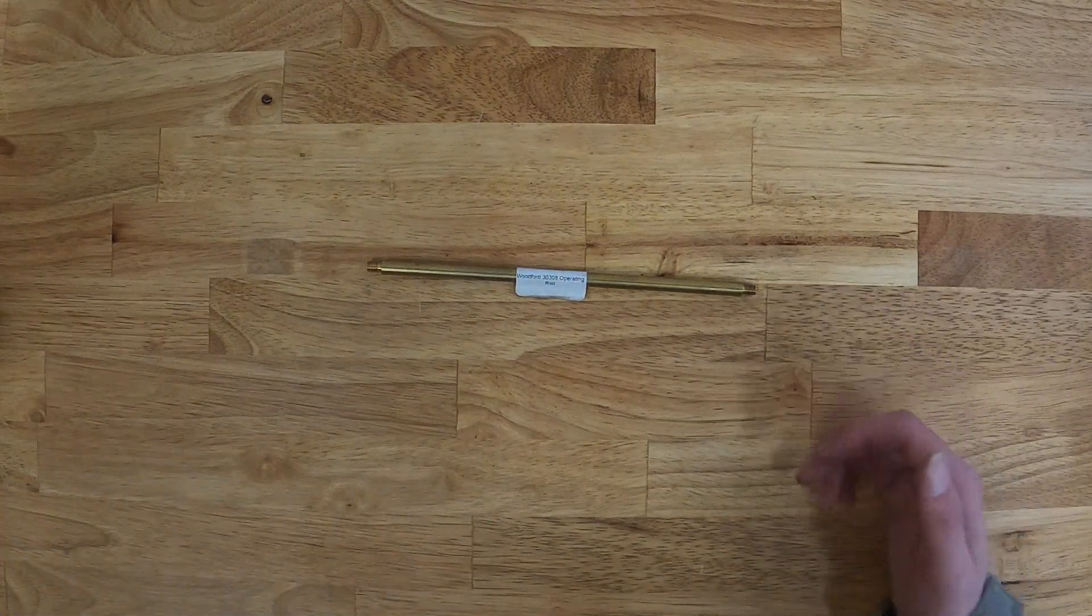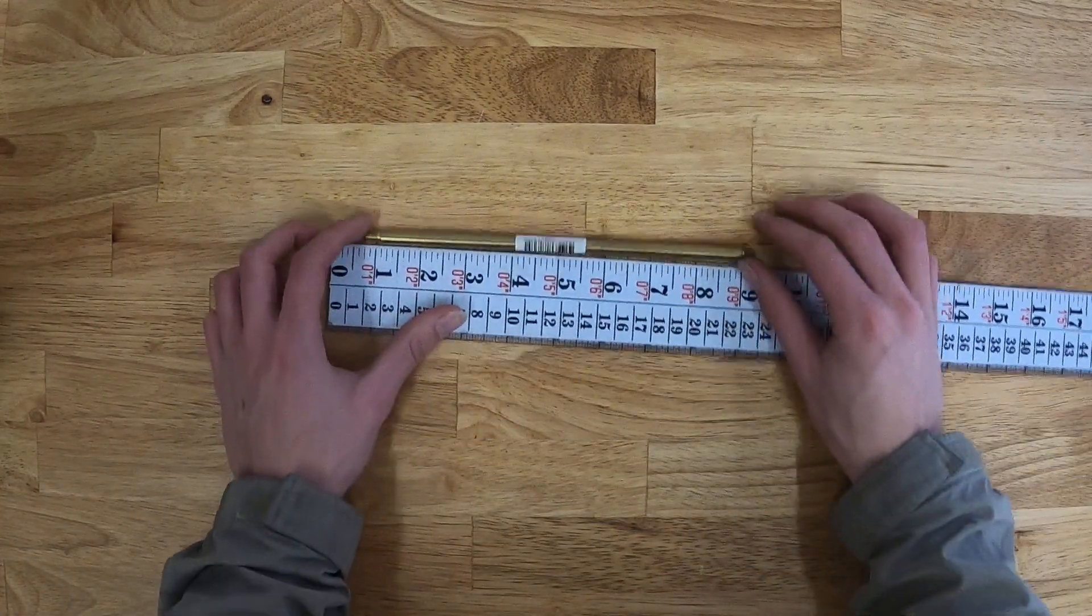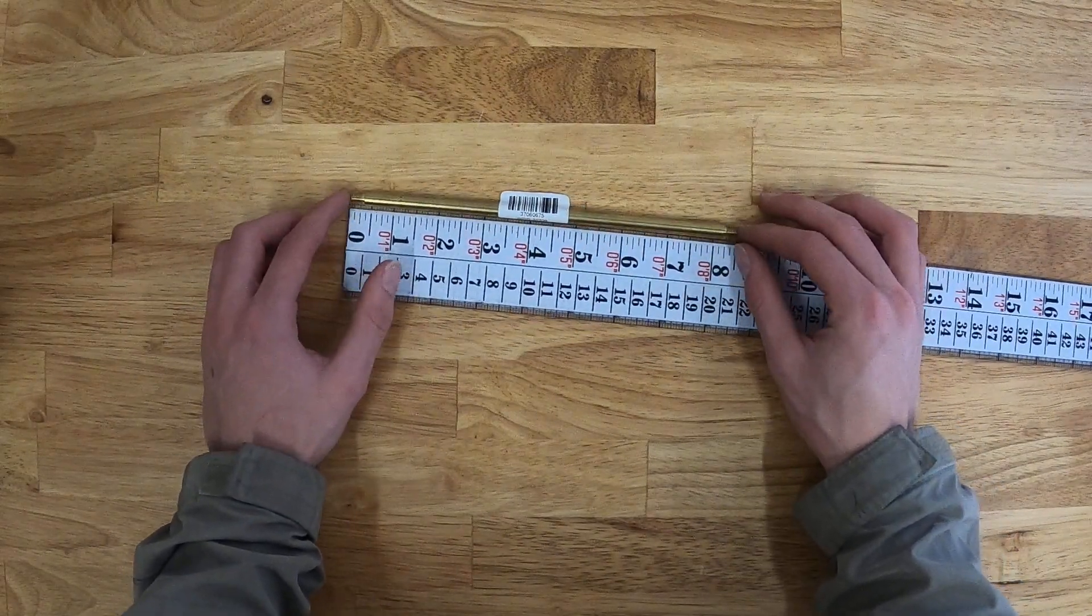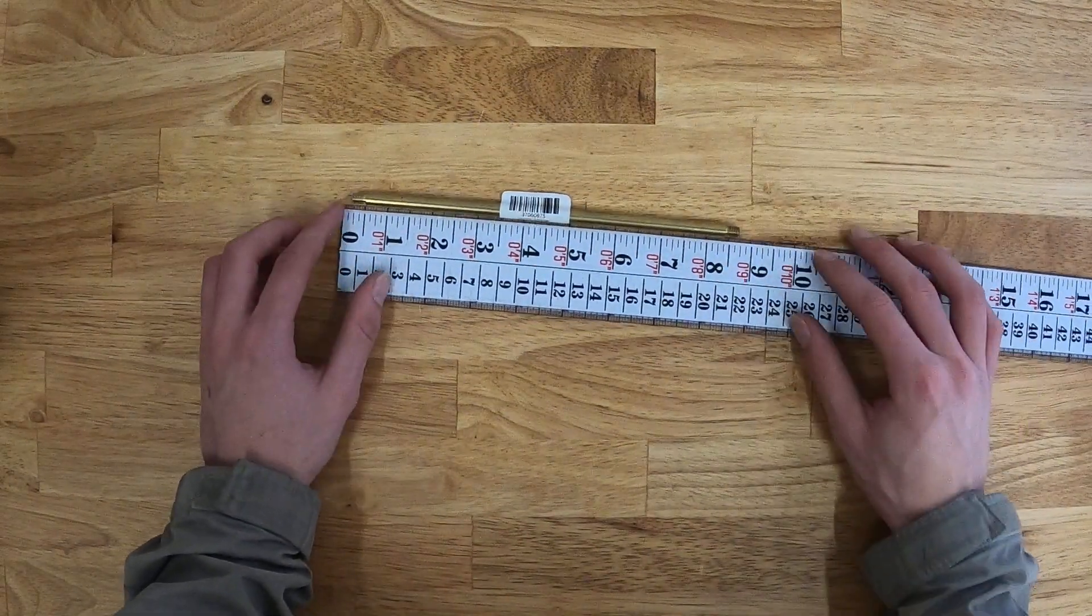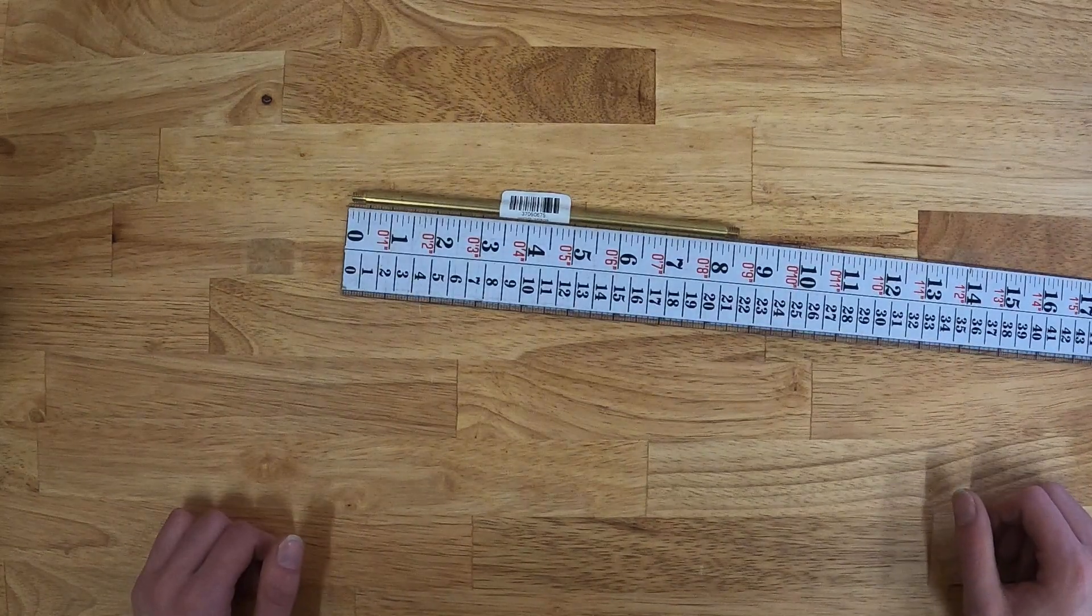So we'll go ahead and take a couple measurements of the rod. First measurement we take will be a total length, so from end to end. And this one measures right at eight and a half inches.